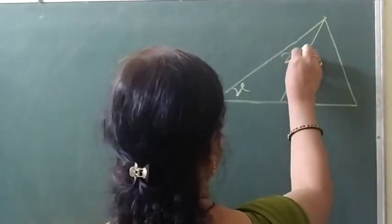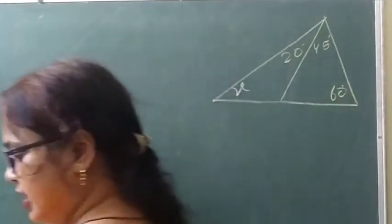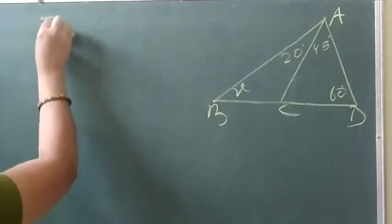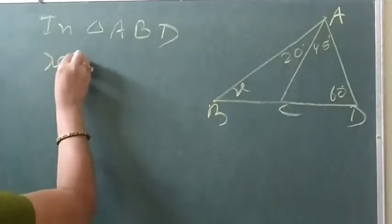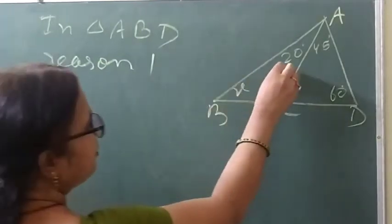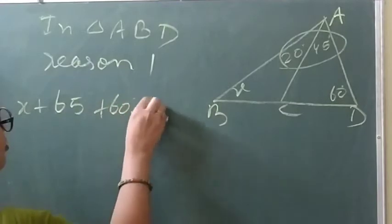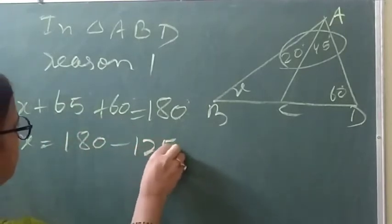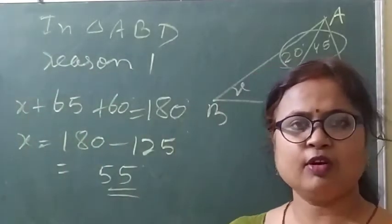Next question. Here is 20 degrees, here is 45 degrees, and this one is 60 degrees. You have to find out the value of x. Label points A, B, C, D. In triangle ABD, Reason 1: x plus 20 plus 45 equals 180. So x plus 65 equals 180, meaning x equals 180 minus 125, which is 55 degrees.